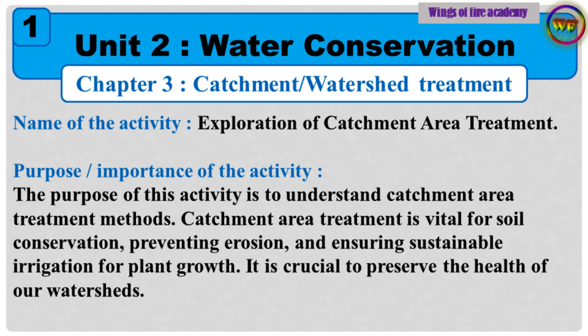Name of the activity: Exploration of Catchment Area Treatment. Purpose and importance of the activity: The purpose of this activity is to understand catchment area treatment methods. Catchment area treatment is vital for soil conservation, preventing erosion, and ensuring sustainable irrigation for plant growth. It is crucial to preserve the health of our watersheds.